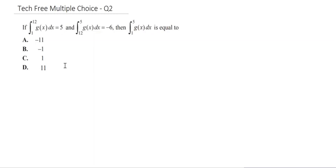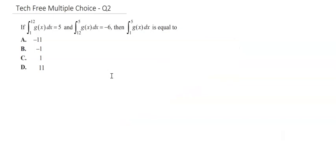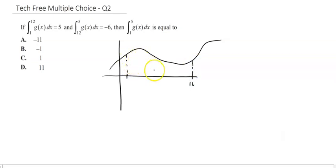This question really tricks people up because it feels like there's not enough here. We're told that the integral between 12 and 1 of some function equals 5, the integral between 5 and 12 of the same function equals negative 6, and we're asked to find the integral between 5 and 1. Let's draw the picture — we've got a squiggly function, and between 1 and 12 the area is 5. Here's 1, here's 12 — let's call that area A, so area A equals 5.